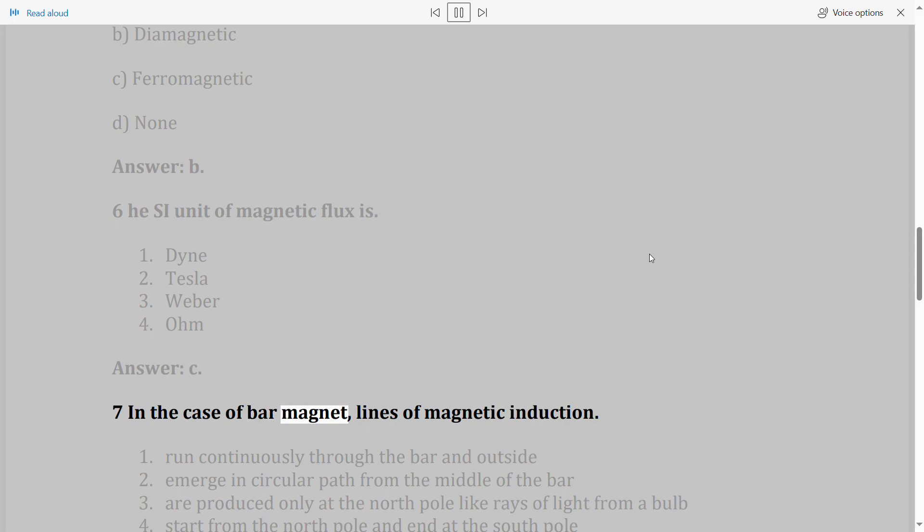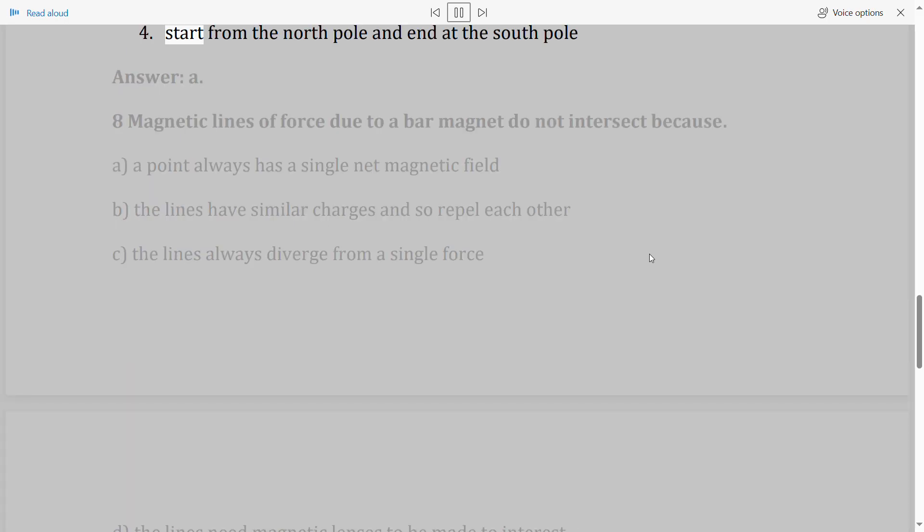Question 5: Magnetic lines of magnetic induction 1. Run continuously through the bar and outside, 2. Emerge in circular path from the middle of the bar, 3. Are produced only at the north pole like rays of light from a bulb, 4. Start from the north pole and end at the south pole. Answer: A.